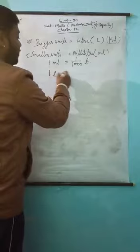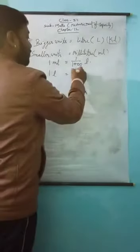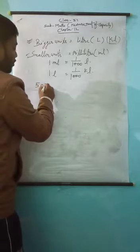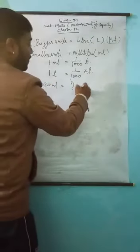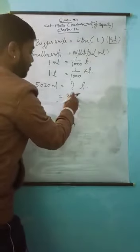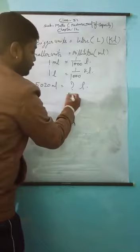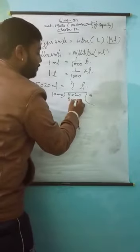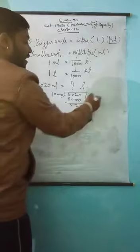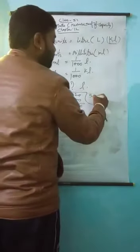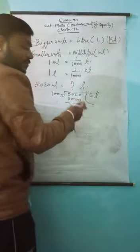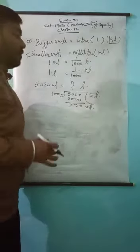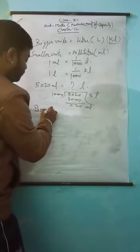If they give some liters and ask to find in kilo liters, we divide by one thousand. For example, five thousand twenty milliliters — convert into liters: five thousand twenty divided by one thousand. Five thousand divided by one thousand gives five, with twenty remaining as the remainder. So five thousand twenty milliliters equals five liters and twenty milliliters.